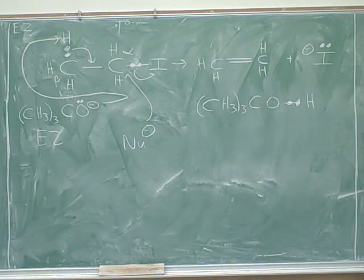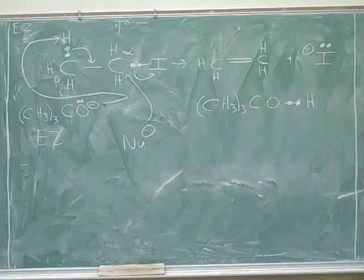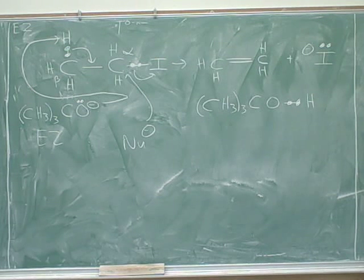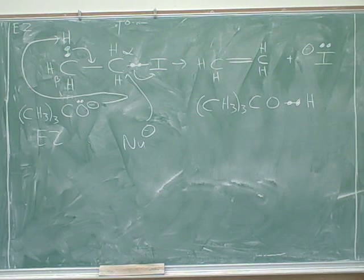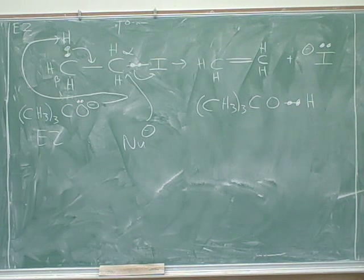If you look at the SN2 reaction on the left, there's only one step and there are no carbocations, because the leaving group leaves simultaneously with the nucleophile joining. There's never a positive charge left behind on the carbon. So you can have an SN2 on a primary carbon because it's never going to form a primary carbocation. Does that make sense? Yeah, okay.